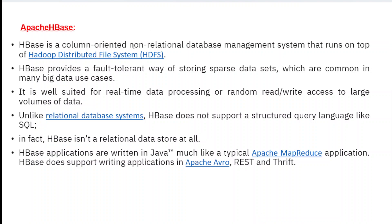Next is Apache HBase. HBase is a column-oriented, non-relational database management system that runs on top of HDFS. HBase is a fault-tolerant way of storing sparse data sets, which are common in many big data use cases. Unlike normal relational databases, data is stored not in rows and columns but in the form of column families. It is well suited for real-time data processing where you can perform read and write operations on large volumes of data.